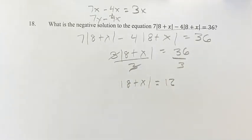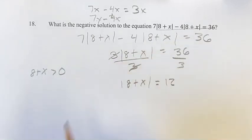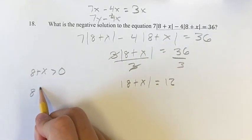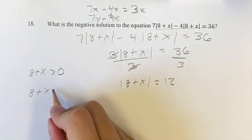So this is where we get into what the negative solution would be and the positive solution would be. If this value, 8 plus x, is greater than 0, then we don't really have to do anything with the absolute value. You get 8 plus x is equal to 12.